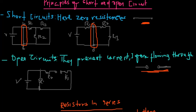Looking at this example, we have a resistor R1 through which current is flowing. Current flows from the positive side through R1 and reaches a certain point, but at that point the current is cut off — it is not able to flow further. This is where we have our open circuit; it prevents current from flowing through.